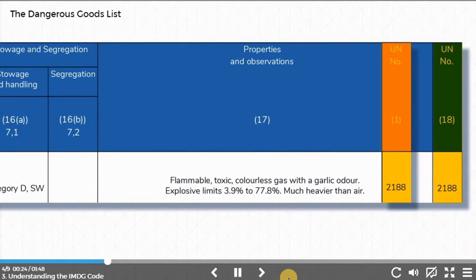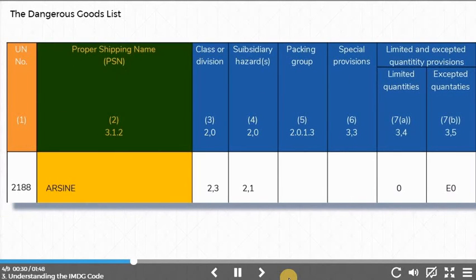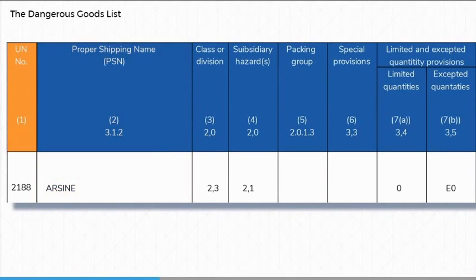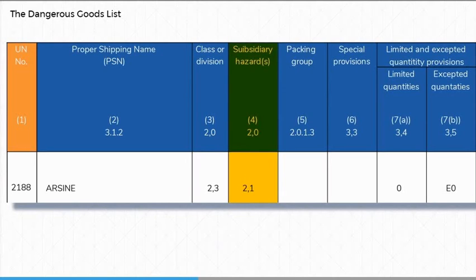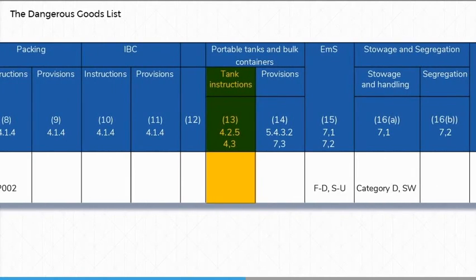Columns 1 and 18 show the UN number. Column 2 shows the proper shipping name, which is always shown in uppercase letters. It may be followed by additional descriptive text. Column 3 shows the class or division of the dangerous goods. Column 4 identifies any subsidiary hazard by its class or division. If the substance is a marine pollutant, it is identified by the letter P. Column 13 contains T-codes applicable to the transport of dangerous goods in portable tanks and road tank vehicles. We will explain more about T-codes later on in the module.